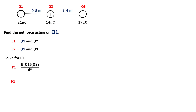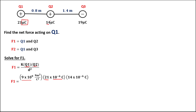Substituting the values: k is Coulomb's constant, that's 9 times 10 to the power 9 newton meters squared per coulomb squared, then times the first charge — 21 microcoulombs, that's 21 times 10 to the power negative 6 — then times charge 2, that's 14 microcoulombs, or 14 times 10 to the power negative 6, all over the distance between charge 1 and charge 2, that's 0.8 meters, squared.